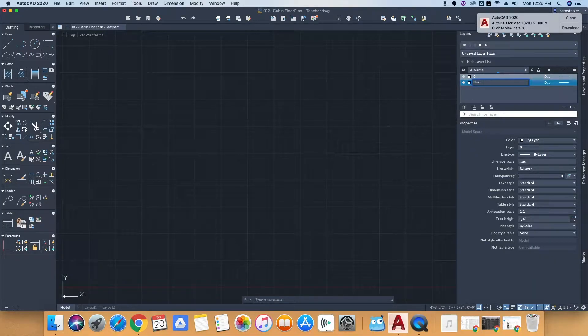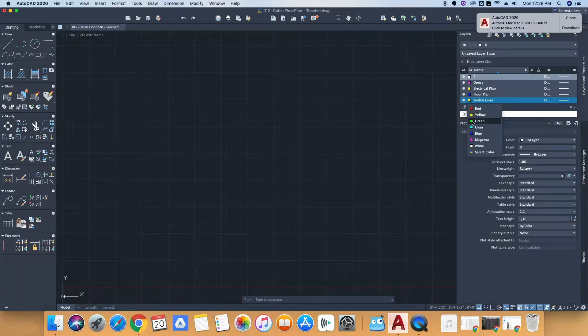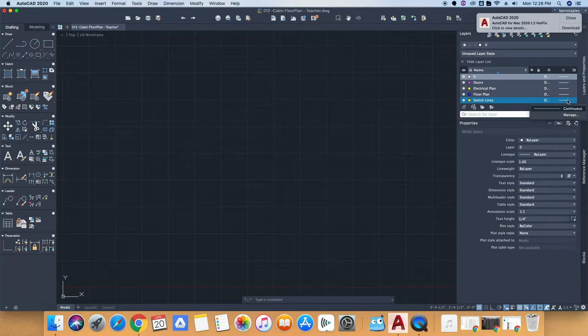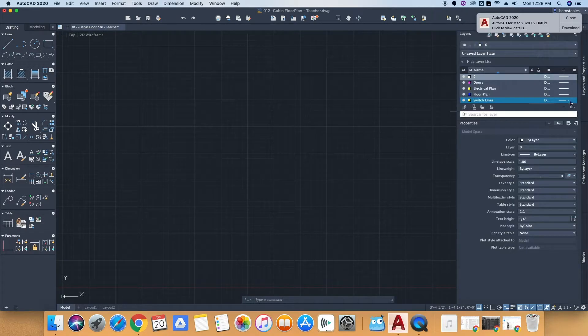The next thing you want to do is set up the layers for this drawing. You will find all of the list of layers in the directions slide that is given to you for this assignment. The only one you have to watch out for I believe is the switch leg line layer. It's going to be a different line type.